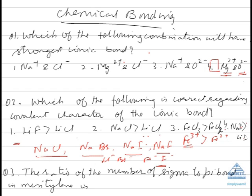Now, after ionic bonds, we come to covalent bonds. Regarding covalent bonds, it is the sharing of electrons. According to the valence bond approach, valence orbitals containing unpaired electrons with positive spin will overlap, and the strength of the bond depends upon the extent of overlapping — greater the extent of overlapping, stronger the bond formed. This overlapping can occur in two ways: either along the internuclear axis, giving rise to a sigma bond, or perpendicular to the internuclear axis, giving rise to a pi bond.